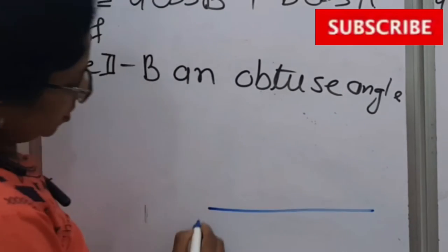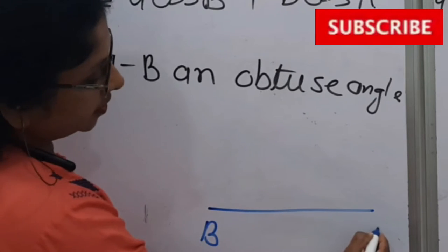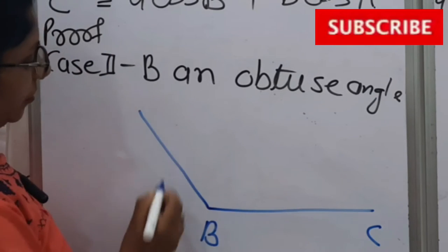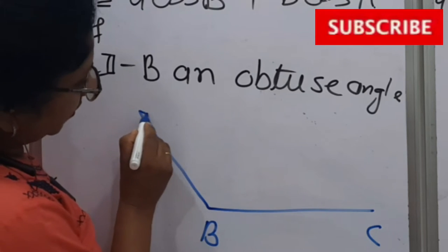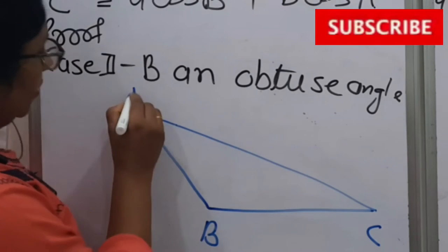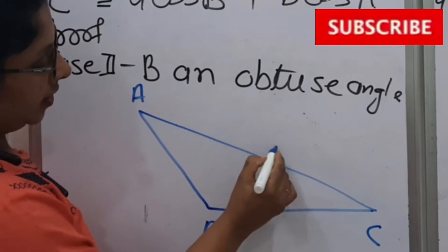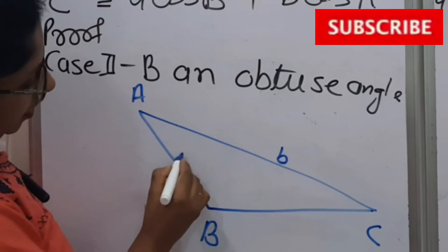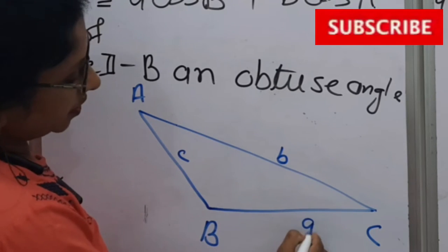So this is B, this is C, and B we want obtuse, it means like this. Now we will join this. This is A. AC means b, AB means c, and BC means a.